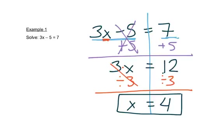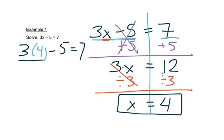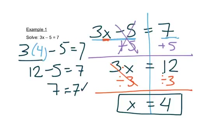Now we can check that. If we go back to the original problem, we have 3, and we got 4 as our answer, minus 5, and we're trying to see: does it equal 7? We have 3 times 4 is 12, minus 5. And 12 minus 5 is 7, so it checks.